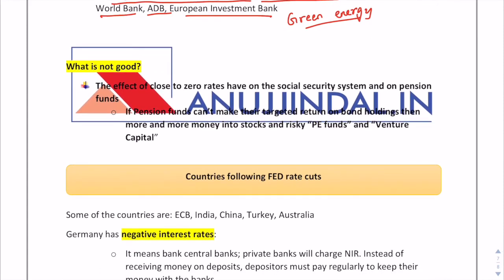Interest rate cuts have been done by many countries. What is the drawback of such a move? A company does not have money to invest, so the share market is also going down because no one has money to invest. Share market is not performing well and as a result, the return on pension funds is also going down.